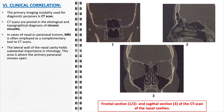The lateral wall of the nasal cavity holds substantial importance in rhinology, as this area is where the primary paranasal sinuses open, including the maxillary, frontal, ethmoid, and sphenoid sinuses. Understanding the anatomy and pathology of the lateral nasal wall is crucial, as any abnormalities or blockages here can affect sinus drainage and lead to conditions like sinusitis.